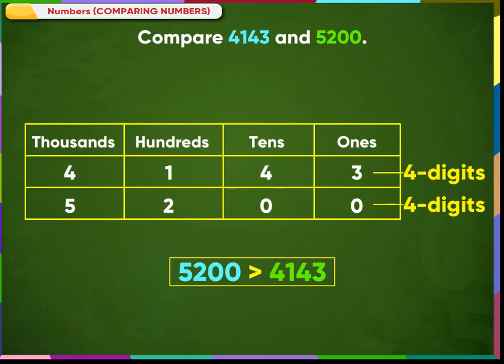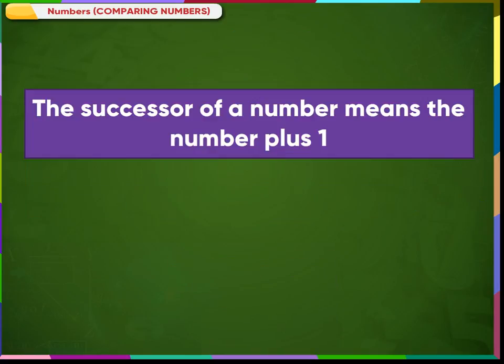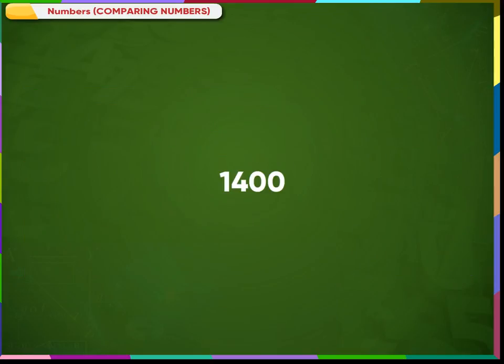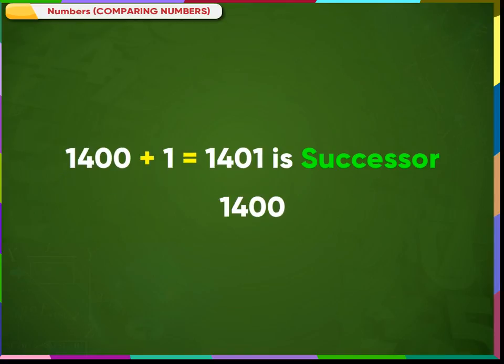The successor of a number means the number plus 1. The predecessor of a number means the number minus 1. For example, the successor of 1400 is 1400 plus 1, which is 1401. The predecessor of 1400 is 1400 minus 1, which is 1399.